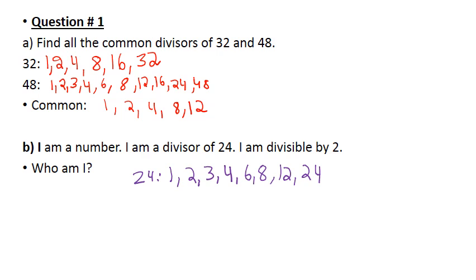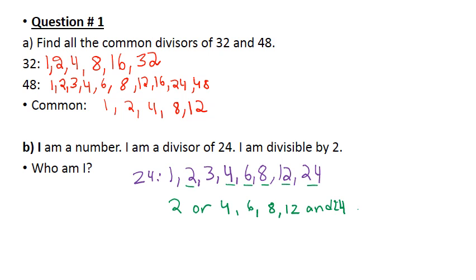Now, what are the numbers that are divisible by 2? They are 2, 4, 6, 8, 12, and 24. So any of these — 2, 4, 6, 8, 12, and 24 — any answer is correct.